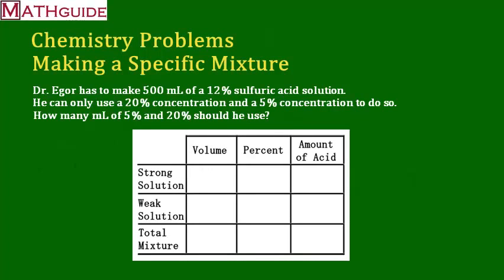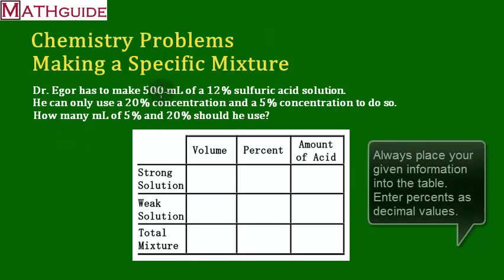So I'm going to go through this problem, and 500 milliliters, that's the total mixture. So I'm going to put 500 milliliters, given that amount. 12% solution, that's a percent. And remember, in our table, we're always going to put the decimal.